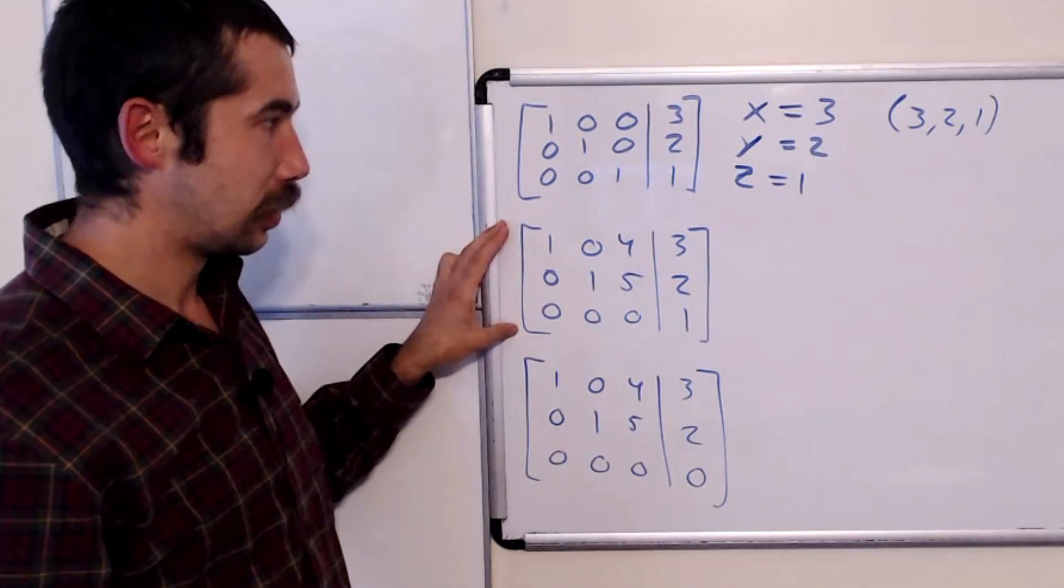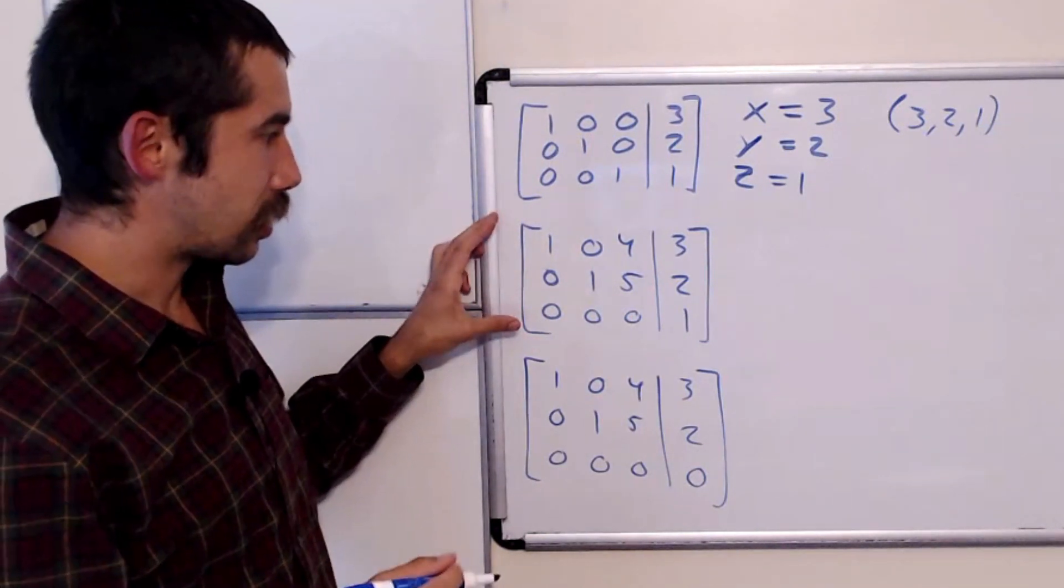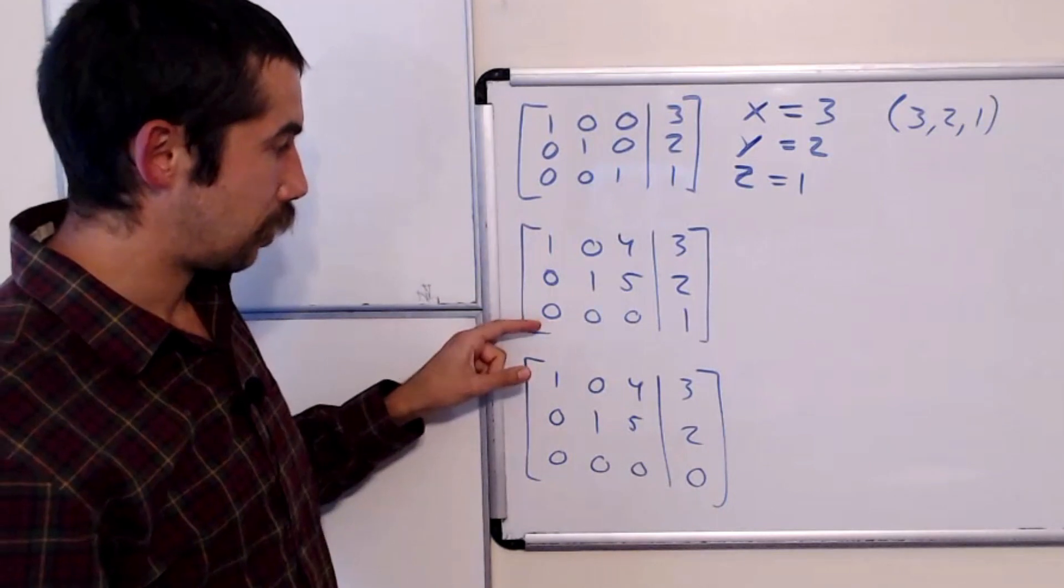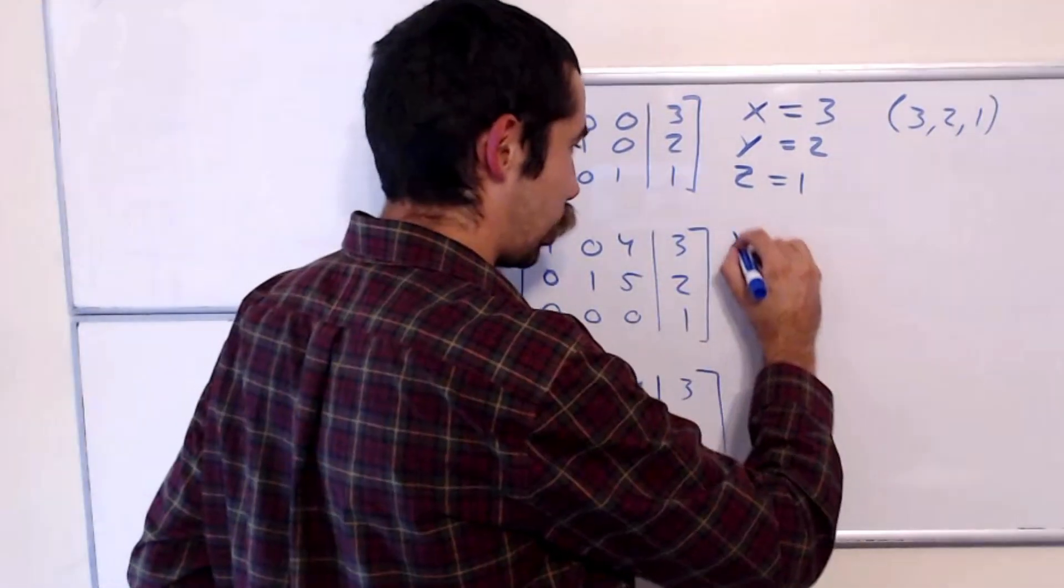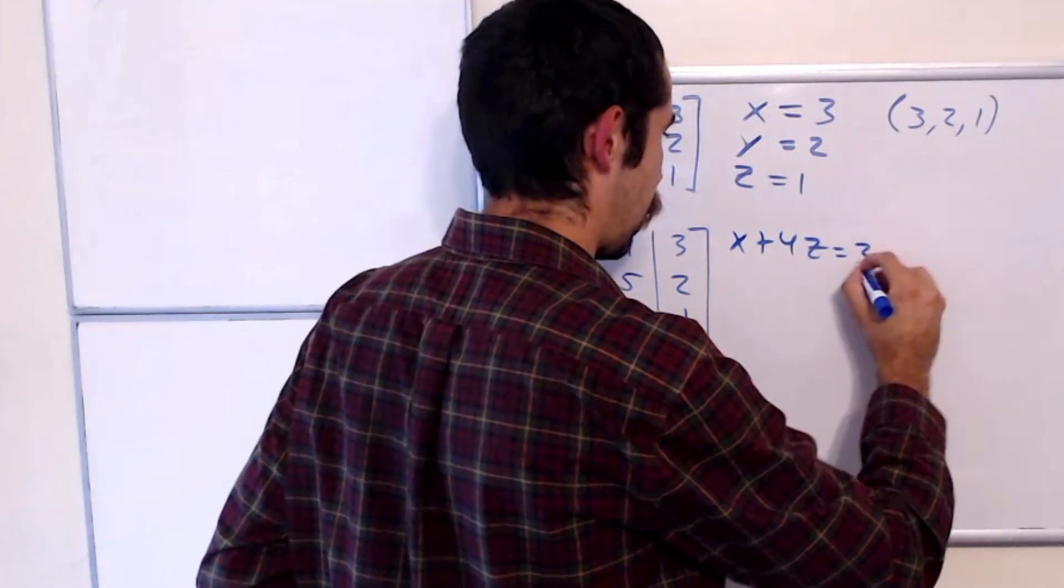Now on to the next one. Now notice it's slightly different here. So our top row corresponds to the equation x plus 4z equals 3.